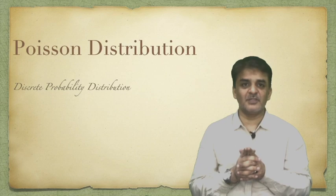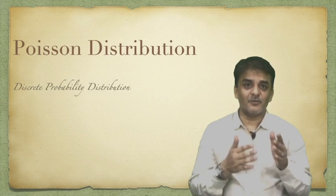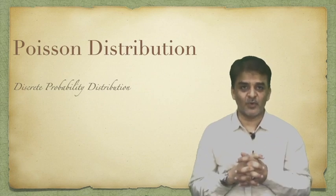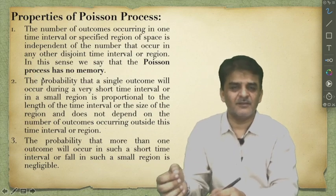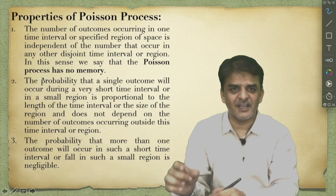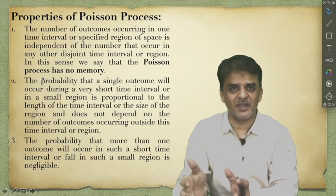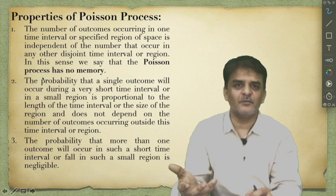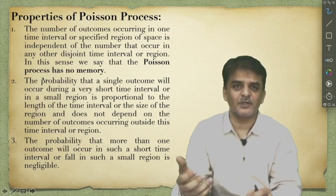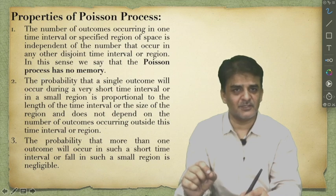This Poisson distribution is based on an inverse exponential formula given by a French mathematician, Siméon Denis Poisson. This is what we call the Poisson process, where the time is defined per interval or the region is defined per definite range. For example, we know the average occurrences per hour, but we want to predict what will happen in the next hour — what is the possibility that more than a certain number will occur in a particular hour. In such situations, we apply Poisson distribution.